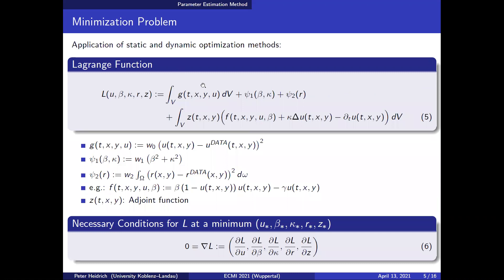We introduce a Lagrange function which includes the objective function. C1 would be the regularization term and c2 would be the L2 norm of the least squares problem of the initial data set. Then we add a second integral which includes the so-called adjoint function and the PDE constraint — this is a kind of Lagrange multiplier. If the PDE system is fulfilled, L corresponds to our objective function.